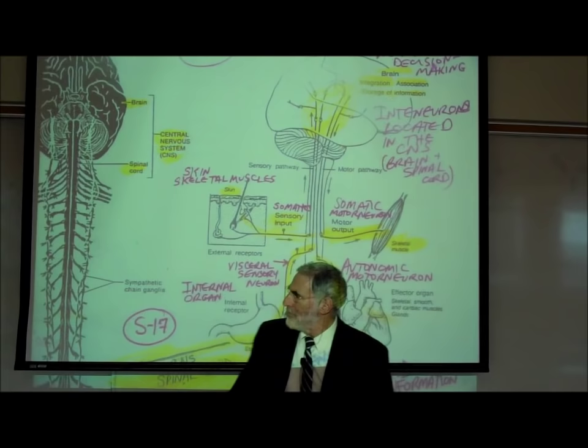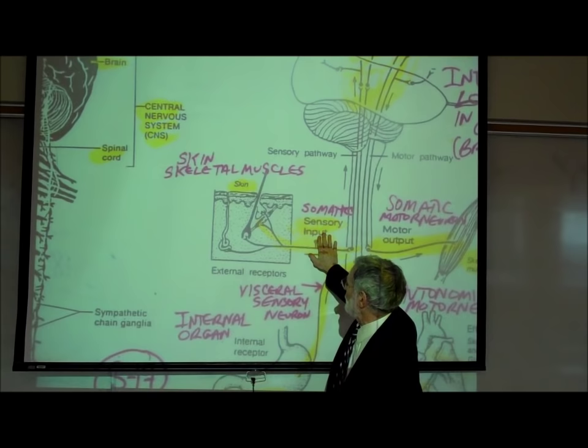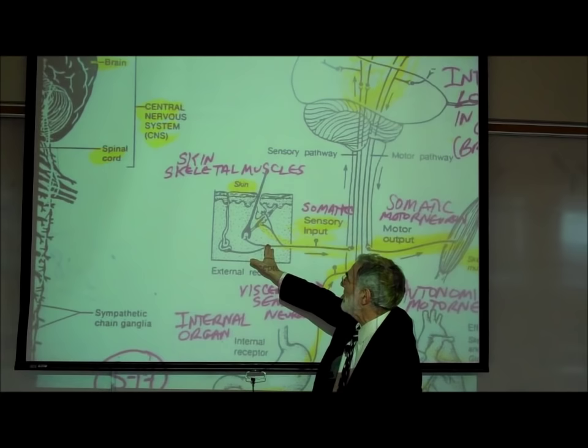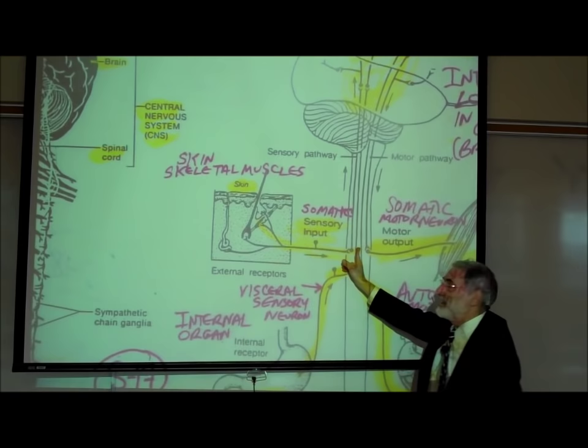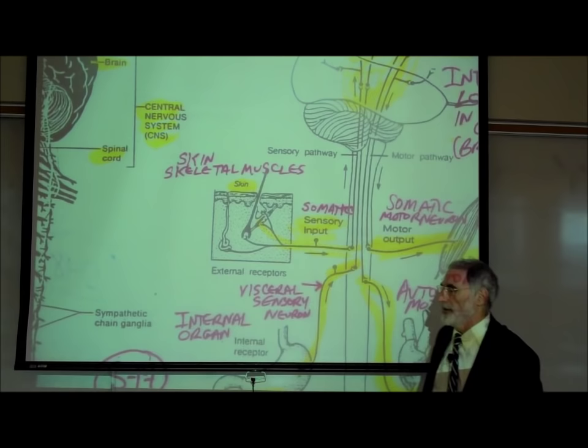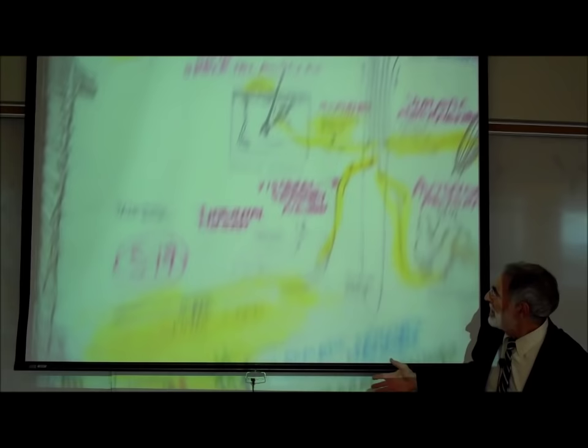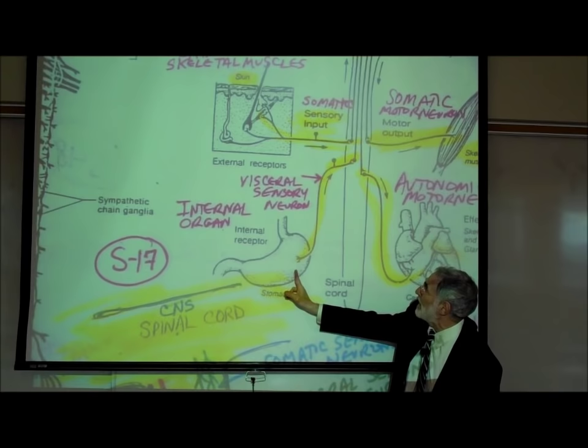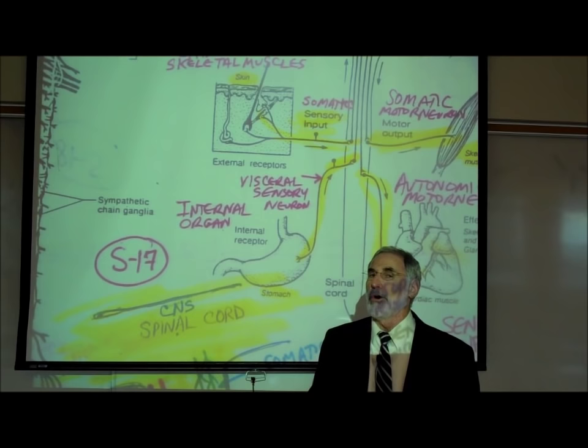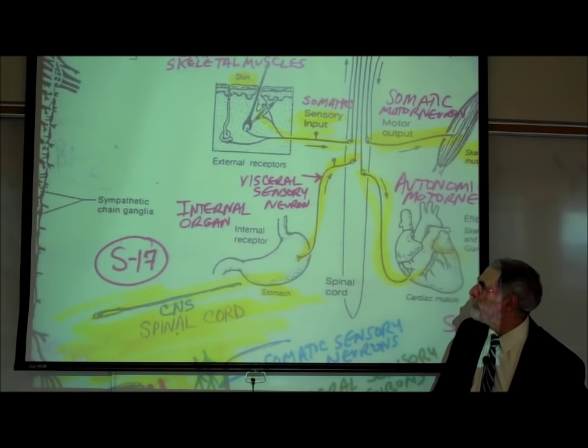Somatic sensory neurons send information from either the skin or skeletal muscles to our spinal cord and brain — our central nervous system. This information reaches consciousness; we generally feel it. The visceral sensory neuron shown here sends information from the stomach to the spinal cord. In general, we do not feel most of this information from our internal organs.